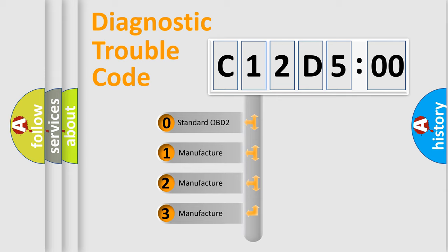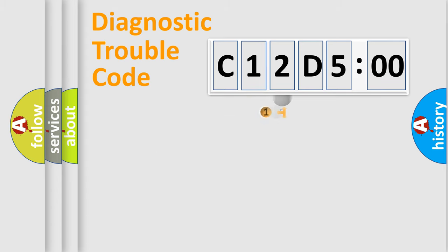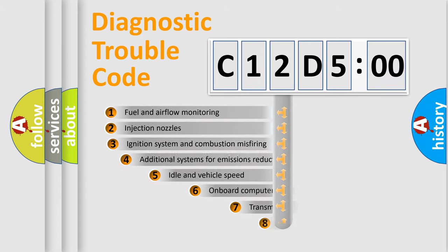If the second character is expressed as zero, it is a standardized error. In the case of numbers 1, 2, 3, it is a more specific expression of the car-specific error.